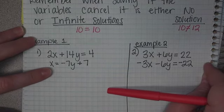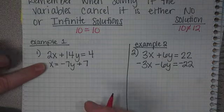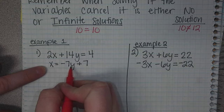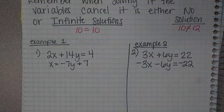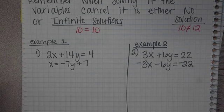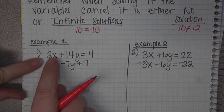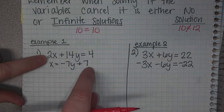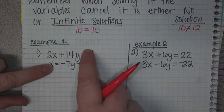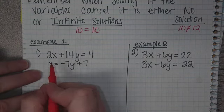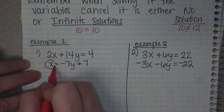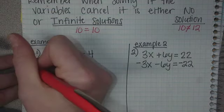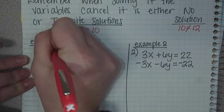Example 1: 2x plus 14y equals 4 and x equals negative 7y plus 7. When you look at this problem, you can see that they're not set up on top of each other. The equal signs are in different spots. On this equation, we can notice that there's an x equals, so you have to solve using substitution.